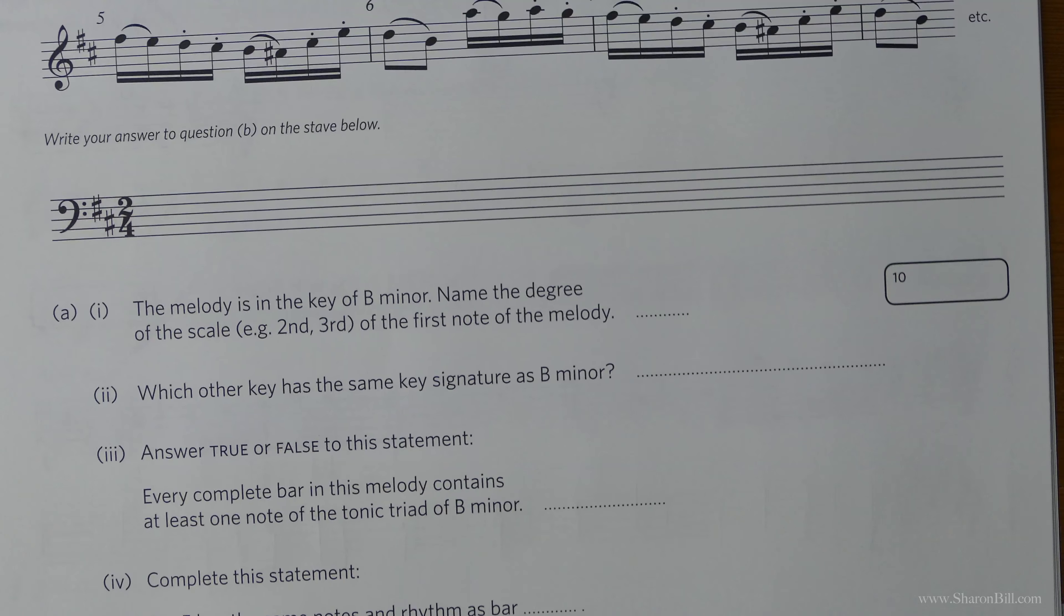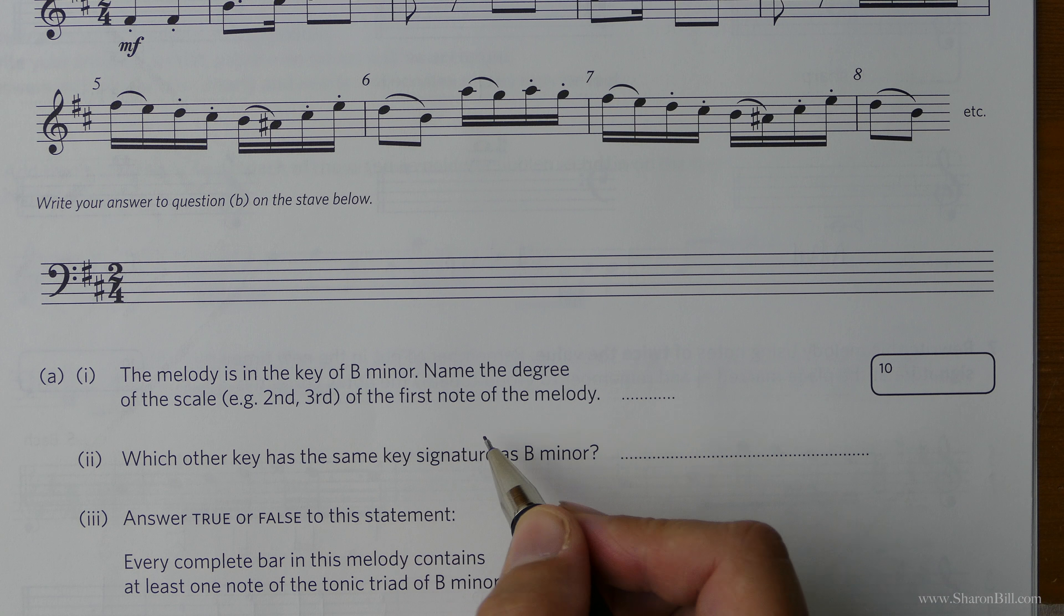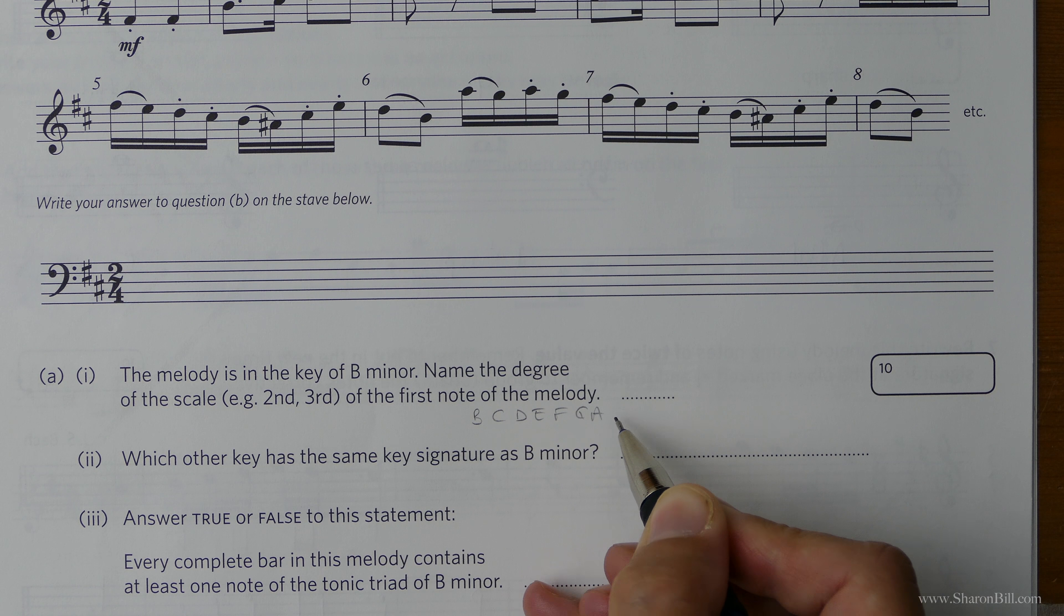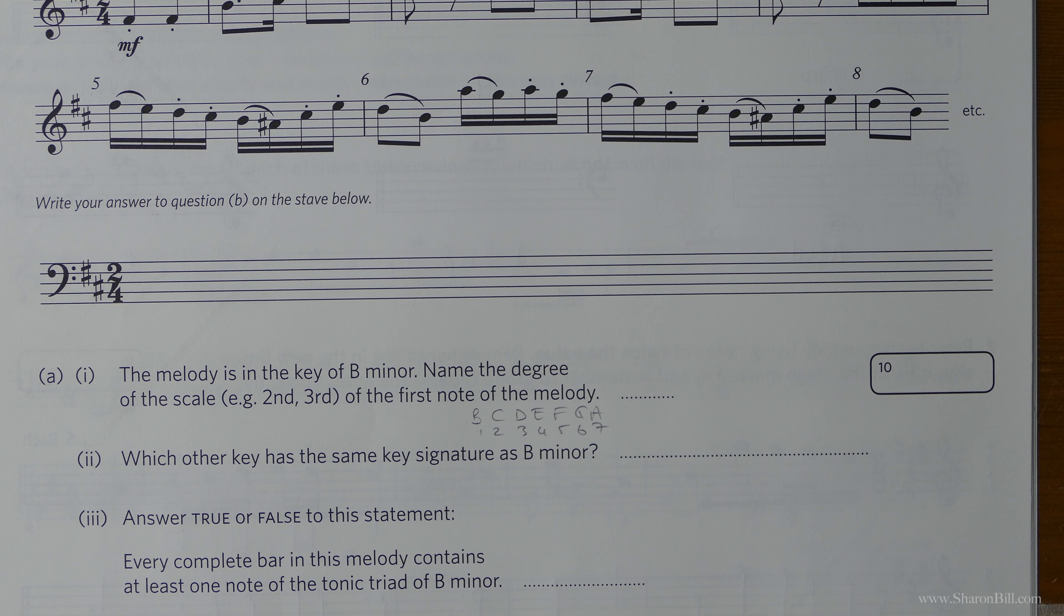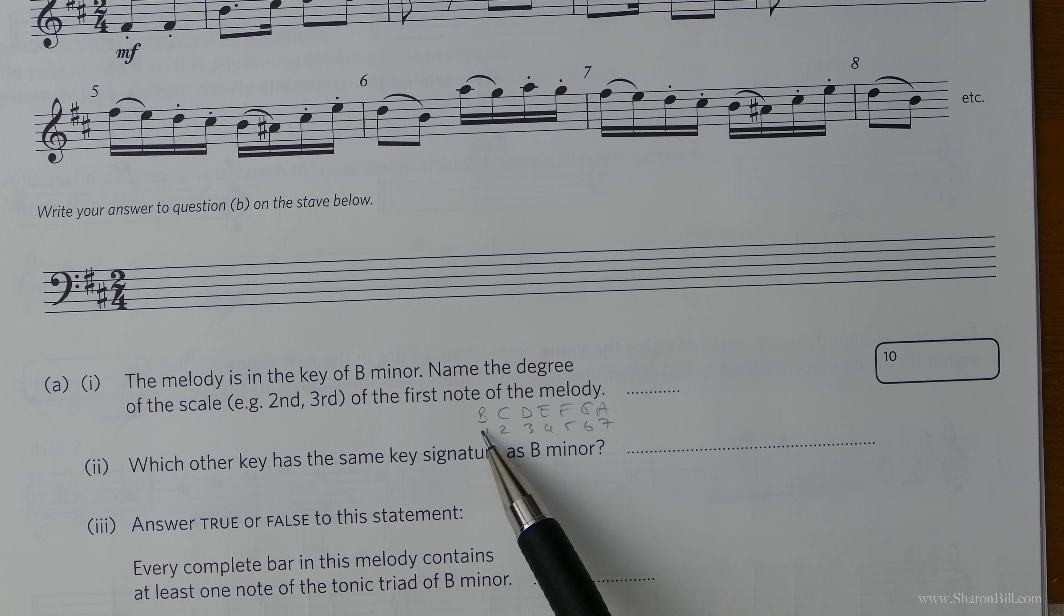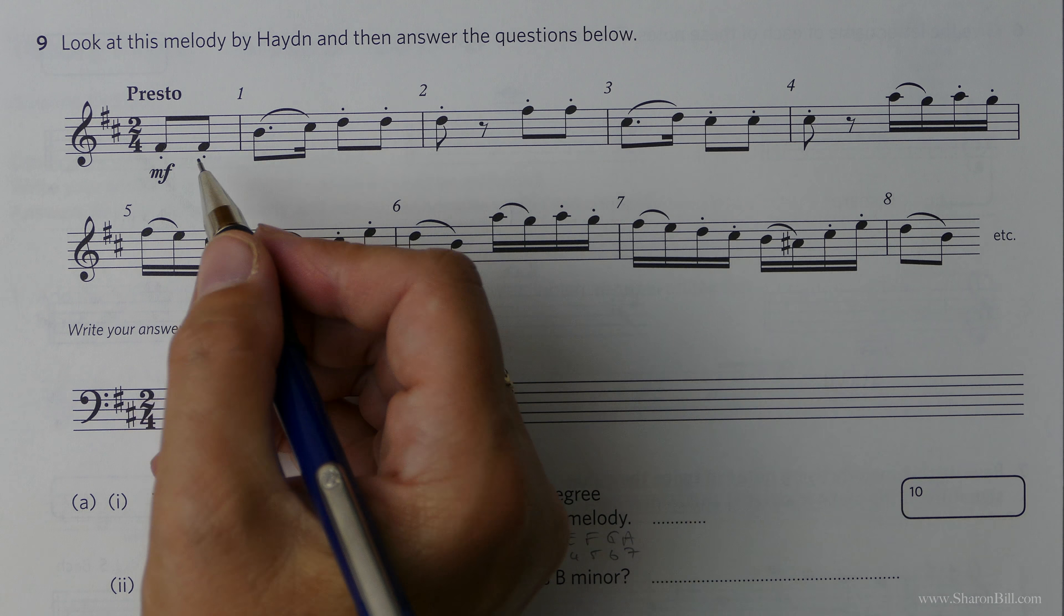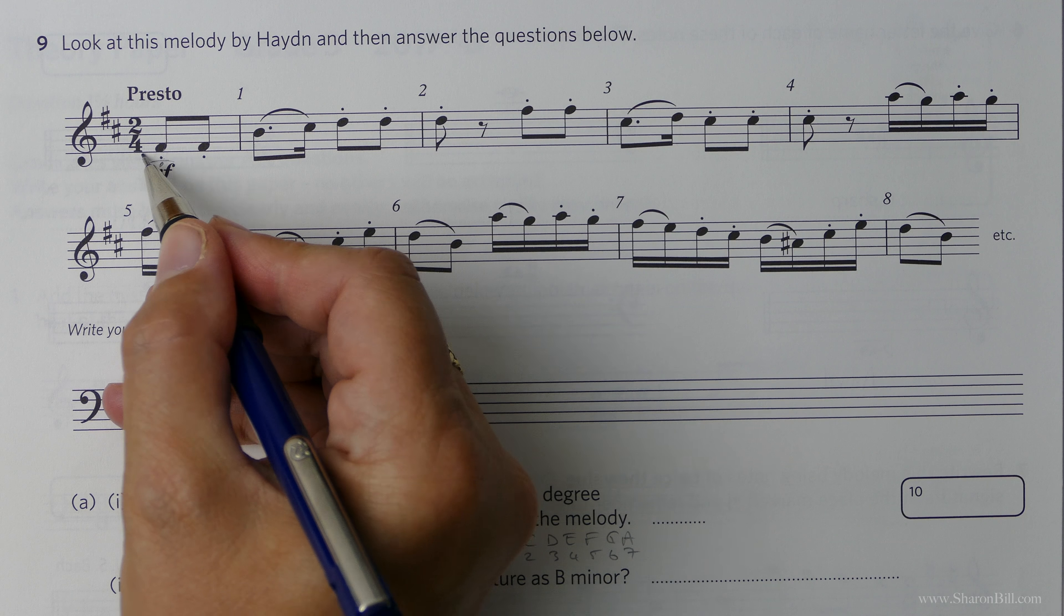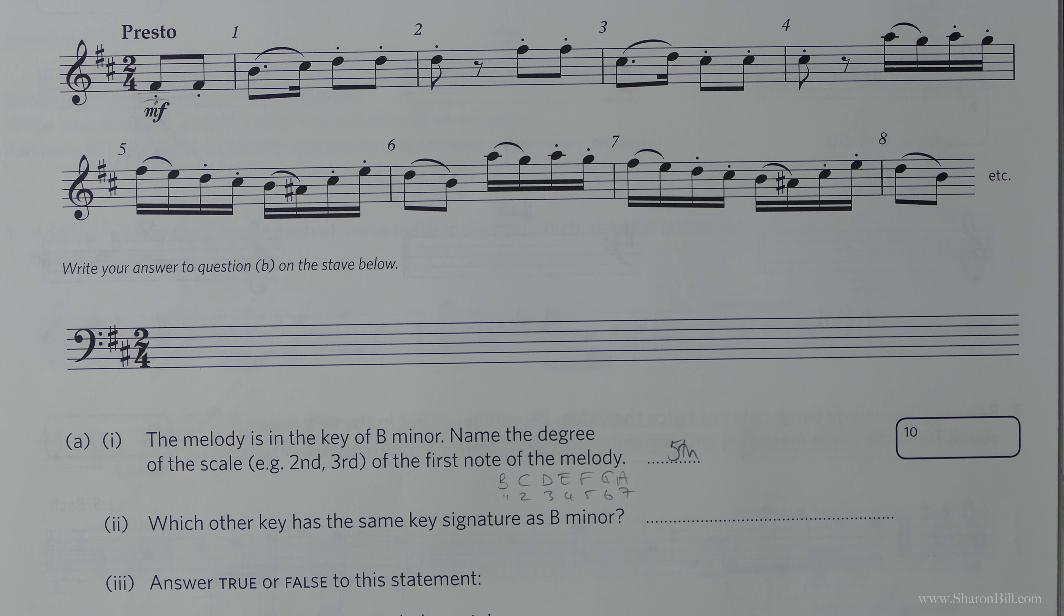We can either just count up from a B or you could write out the scale of B minor. Just give yourself the letters. So we've got B, C, D, E, F, G, A, 1, 2, 3, 4, 5, 6, 7. I know there's key signatures and accidentals but this will do the job. So here we've got an F. An F is 1, 2, 3, 4, 5, the fifth. Or you could find a B. There's a B below middle C. 1, 2, 3, 4, 5.